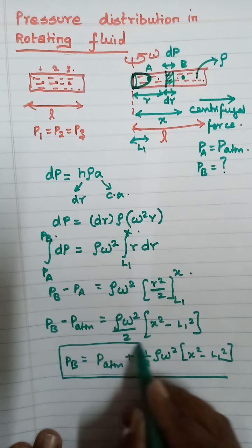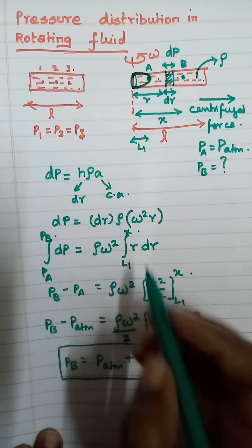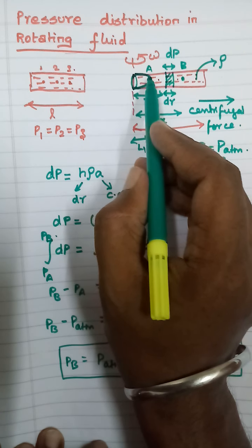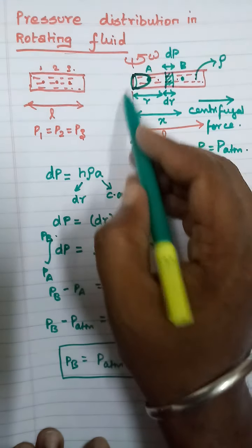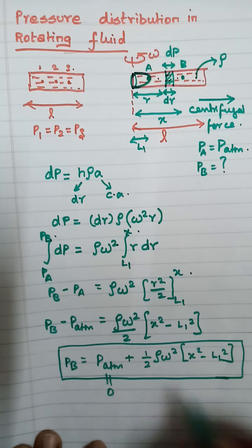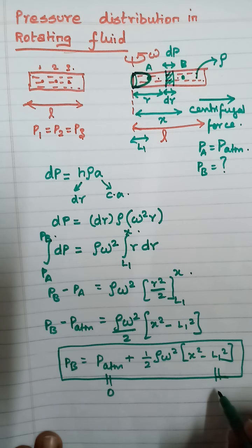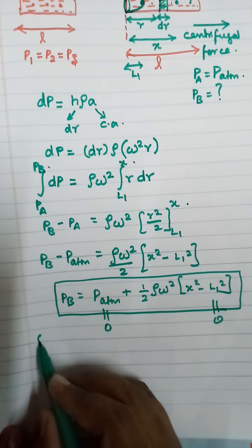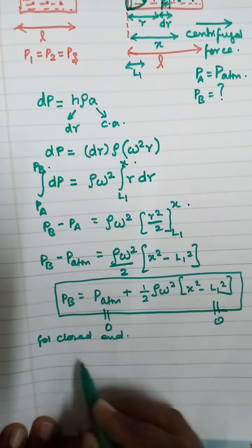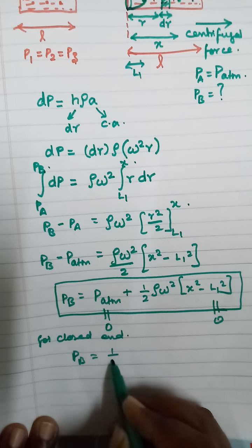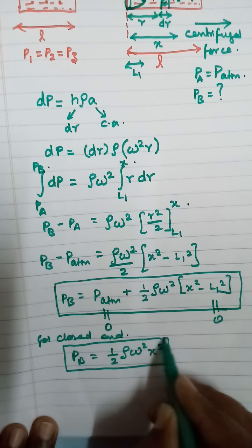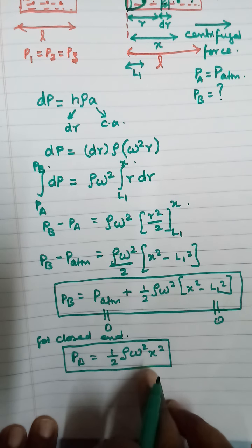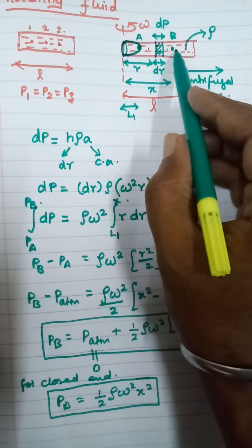This is the pressure at point B. If this is not the open end and the liquid is not forming any parabolic shape, then in that case, as it is a closed end, the atmospheric pressure will be 0, and it will not form any parabolic shape. In this case, L1 squared will also become 0. So for a closed end, PB is equal to one-half rho omega squared X squared. This is the required expression for finding the pressure at point B.